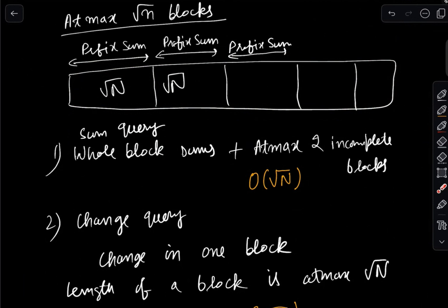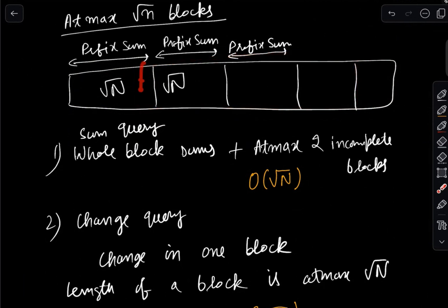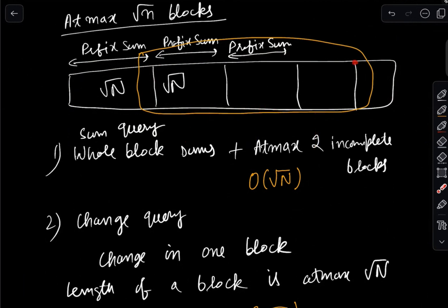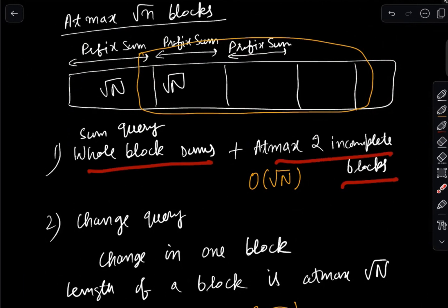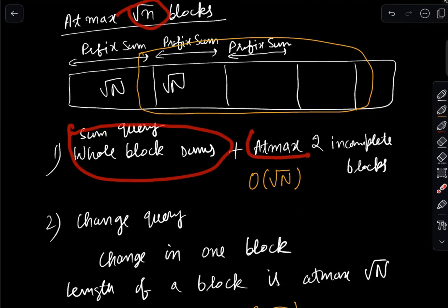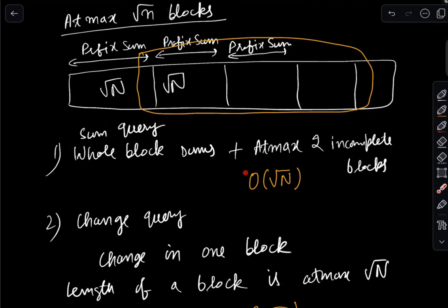For a sum query from l to r: we take the sum of whole complete blocks in between, and for the two incomplete blocks at the ends we use the prefix sum of those blocks to get partial sums in constant time. The number of complete blocks is limited by √n, so this takes O(√n) time. The two incomplete parts are constant time, so the overall sum query is O(√n).